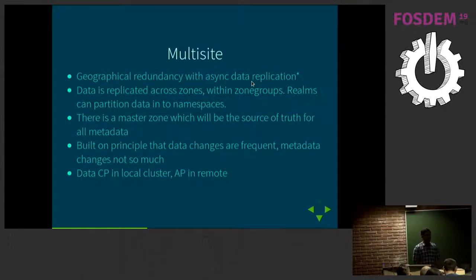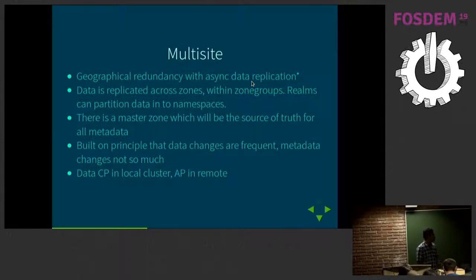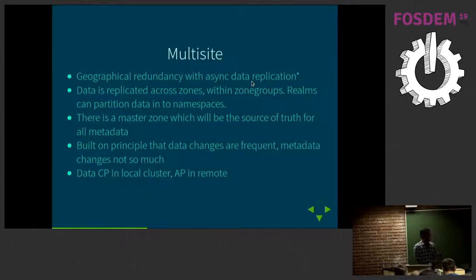The basic premise is that data changes are very frequent in a cluster, whereas metadata changes are not as frequent. Metadata changes tend to have a cluster-wide effect — when you create a user or a container, it has to be replicated to every other Ceph cluster. Object changes are something local to a Ceph cluster and asynchronously transmitted. So data is CP in a local cluster, AP in a remote cluster, in terms of CAP consistency.